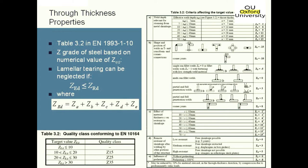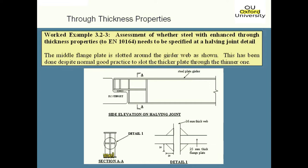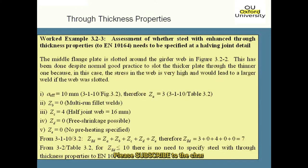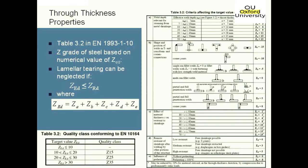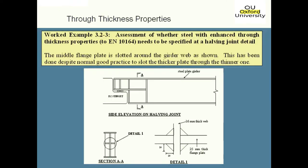So that ZED value of 7 is less than 10, which according to Table 3.2 means you don't need Z quality steel, so the detail is okay. As mentioned, this is a good method to assess whether you've got a reasonable detail, but in the UK the National Annex specifies not to use this method — instead it tells you to go talk to the contractor or fabricator and get their opinion. That's usually the best option anyway, because otherwise you end up with very high grade steels that are very expensive.